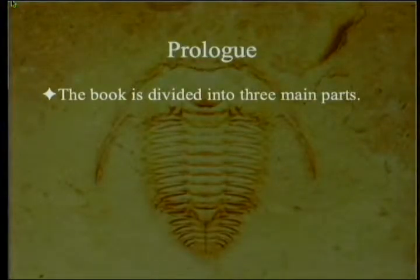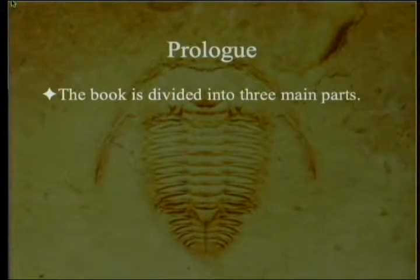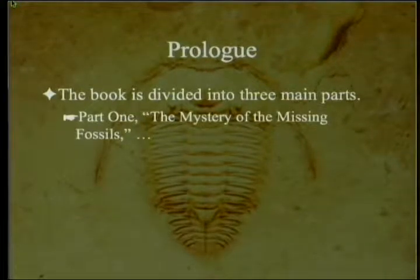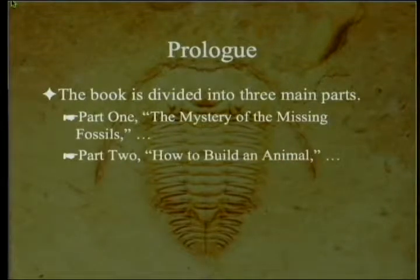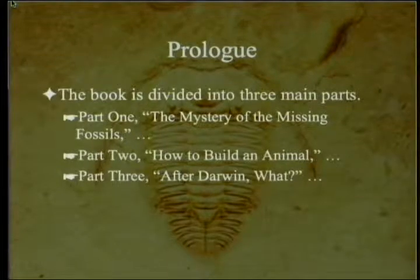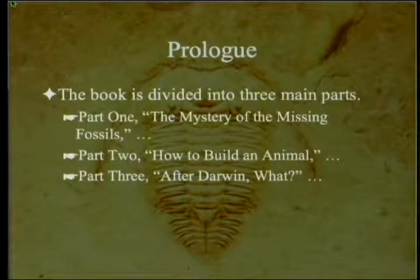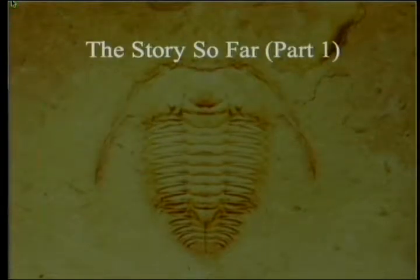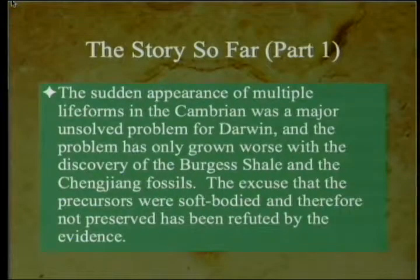The book itself is divided into three main parts, and I'm quoting the prologue here. Part one: the mystery of the missing fossils. Part two: how to build an animal. And part three: after Darwin, what? We're in the middle of part two. To review, we went through part one, the mystery of the missing fossils.